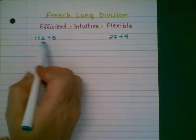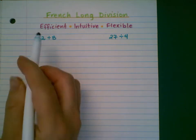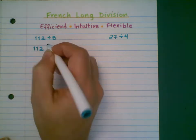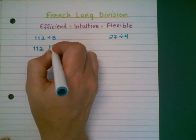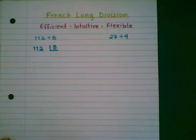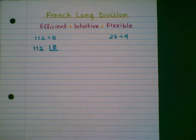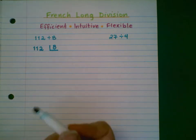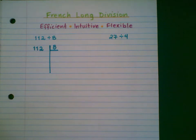So the problem to start with is 112 divided by 8. The first step is to write the dividend — the number that's going to be divided — and then it's going to be separated out into groups of 8. Think of this little L shape as though you had a pile of 112 objects and you're coming in and scooping out groups of 8. It's your job to determine how many groups of 8 there are in that 112.